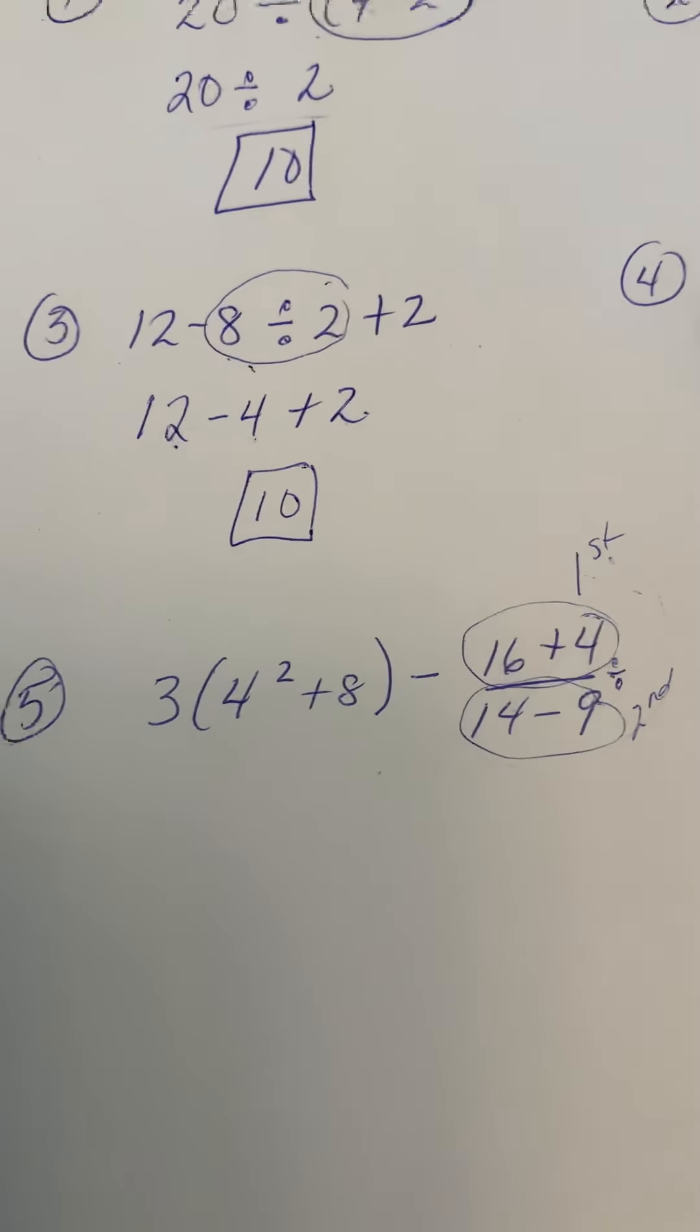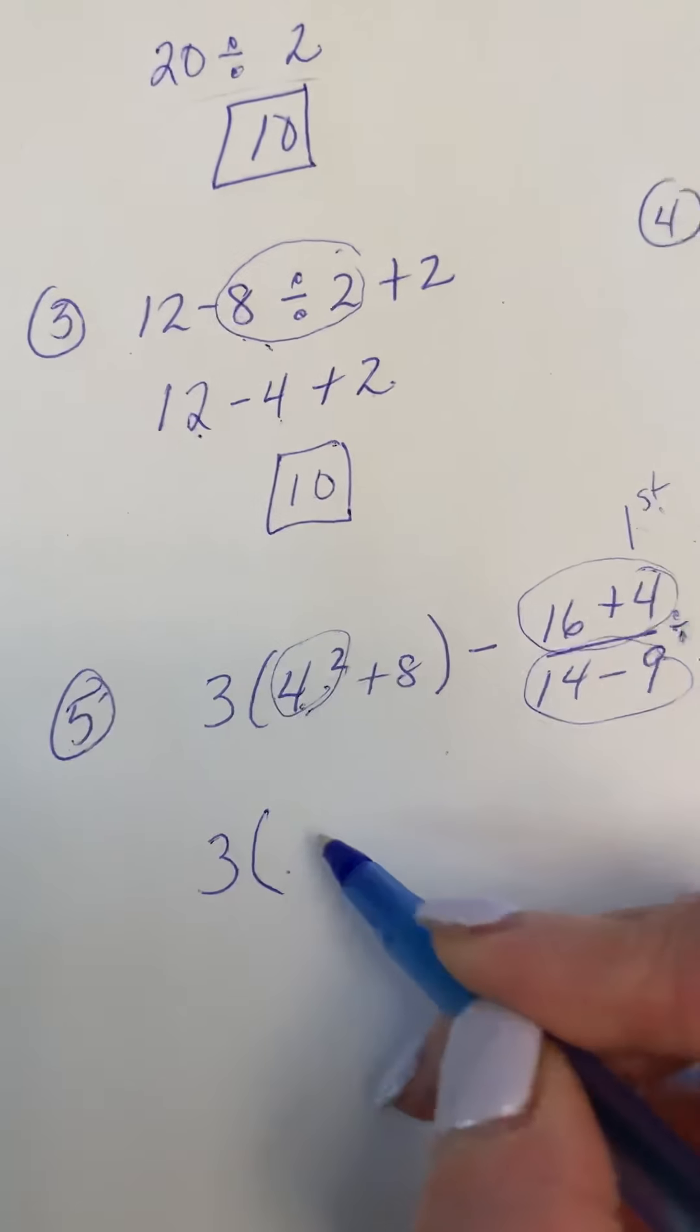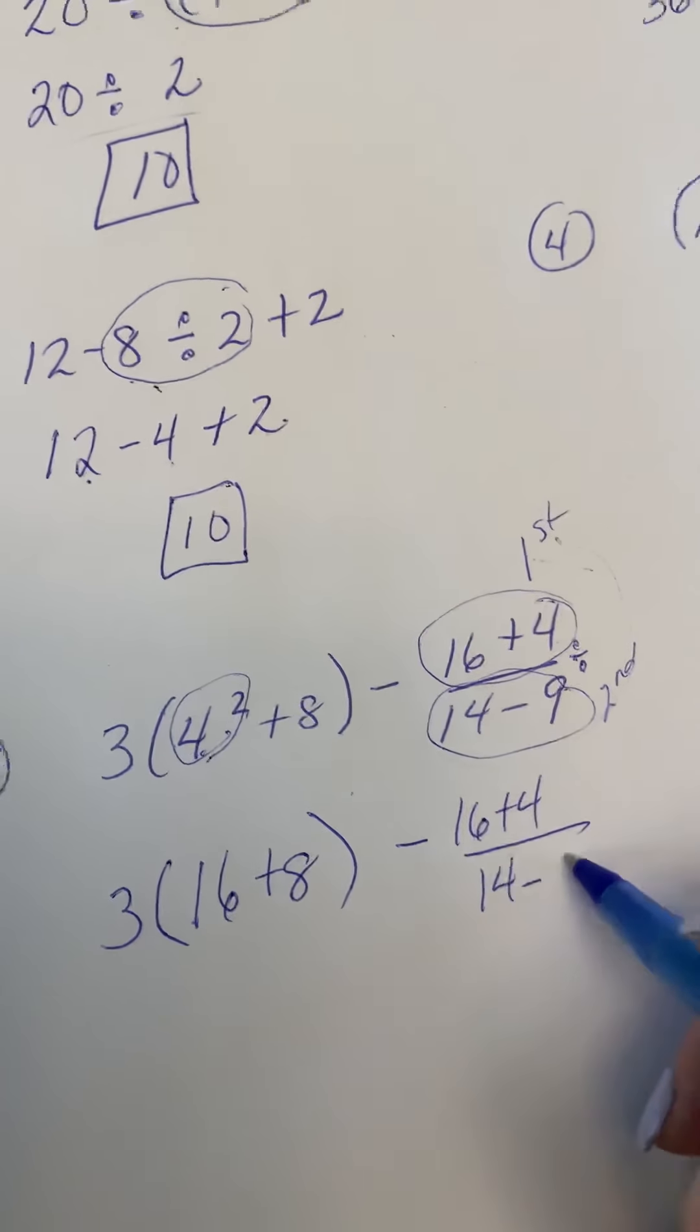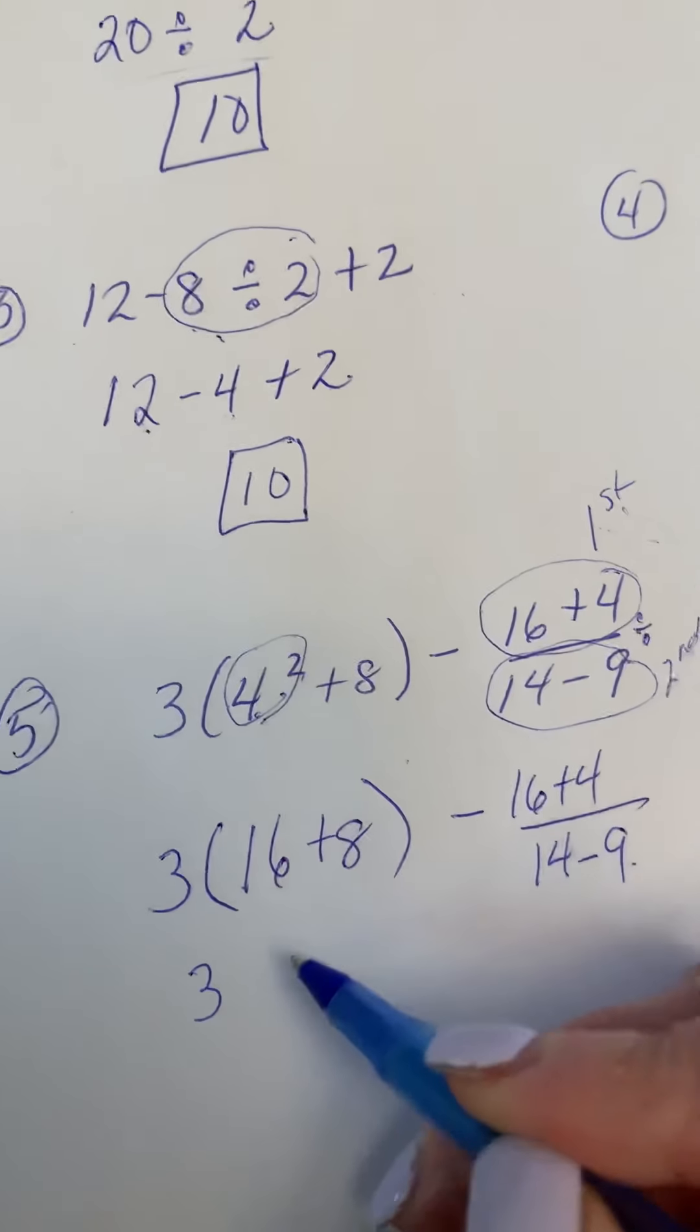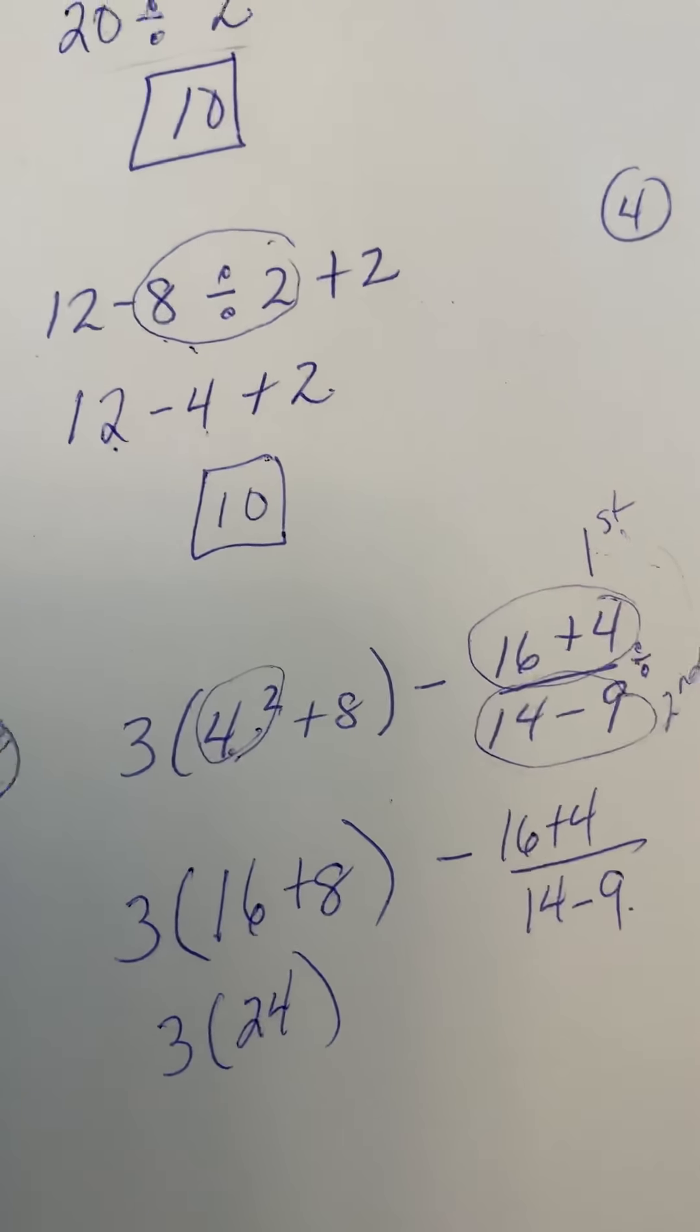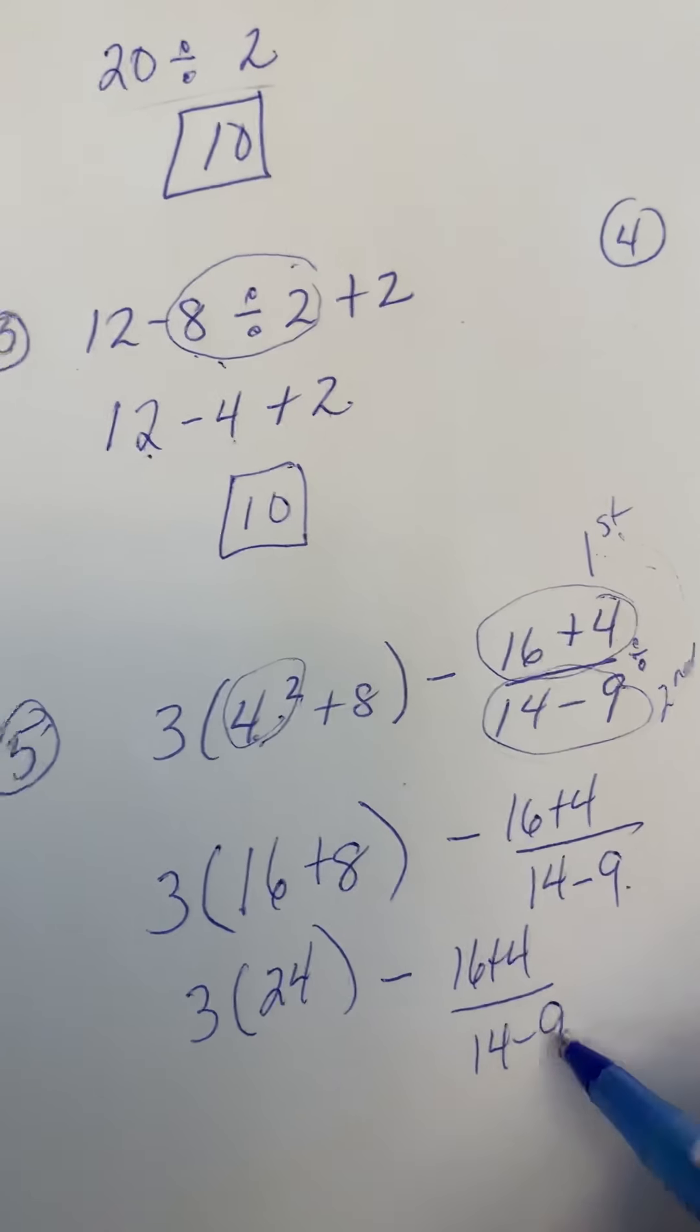I'm just going to walk you through typically how I would approach this question. 3 and then inside here we have exponents, so times 4 squared is 16, and then I would rewrite the question because that's what I expect my kids to do all the time. So we still have brackets to take care of.